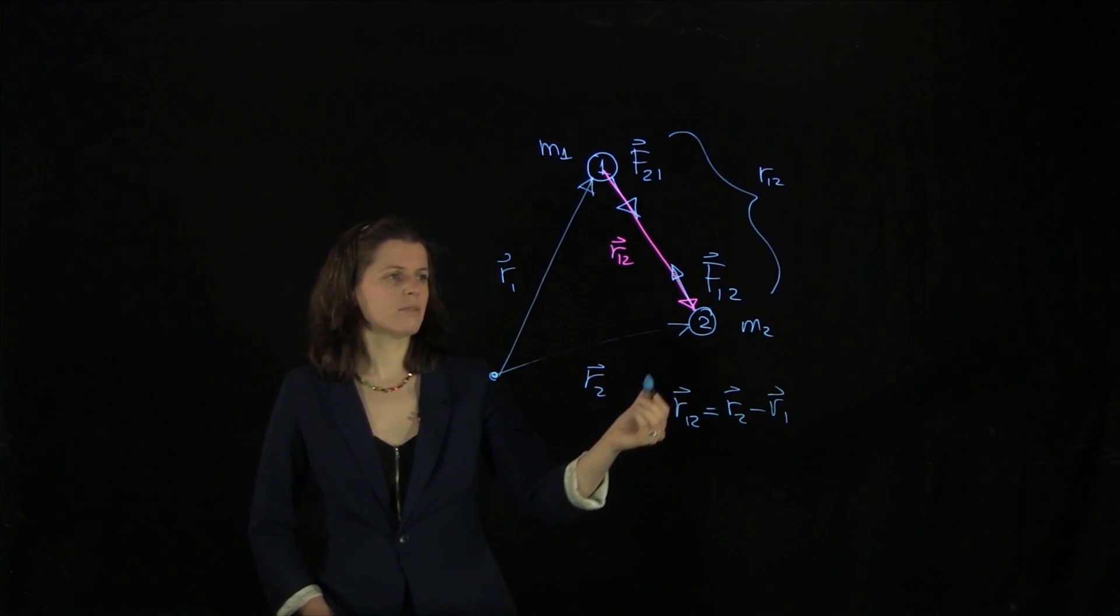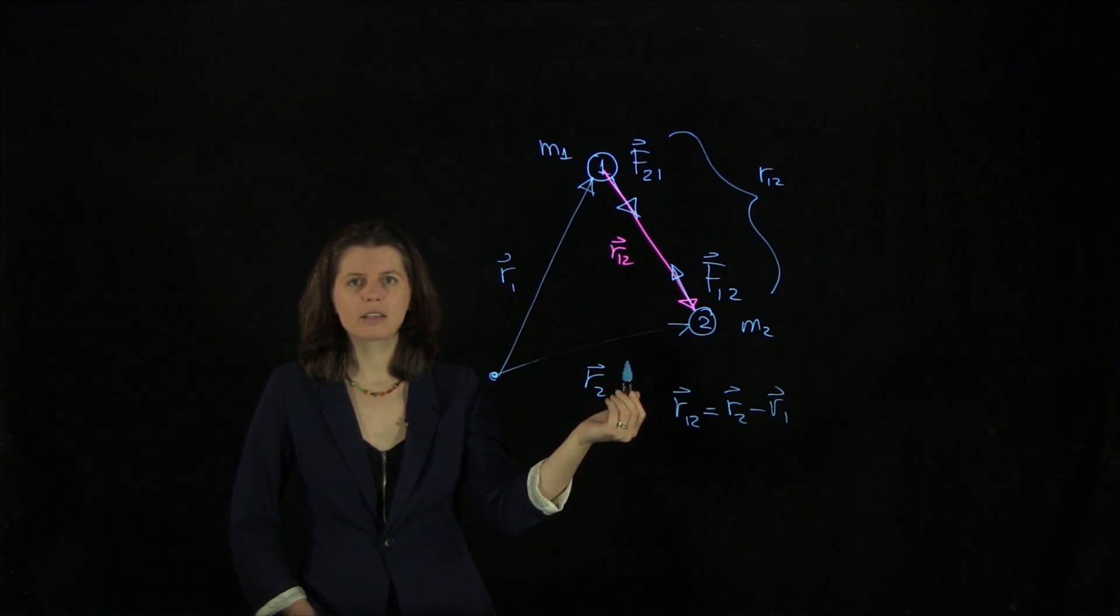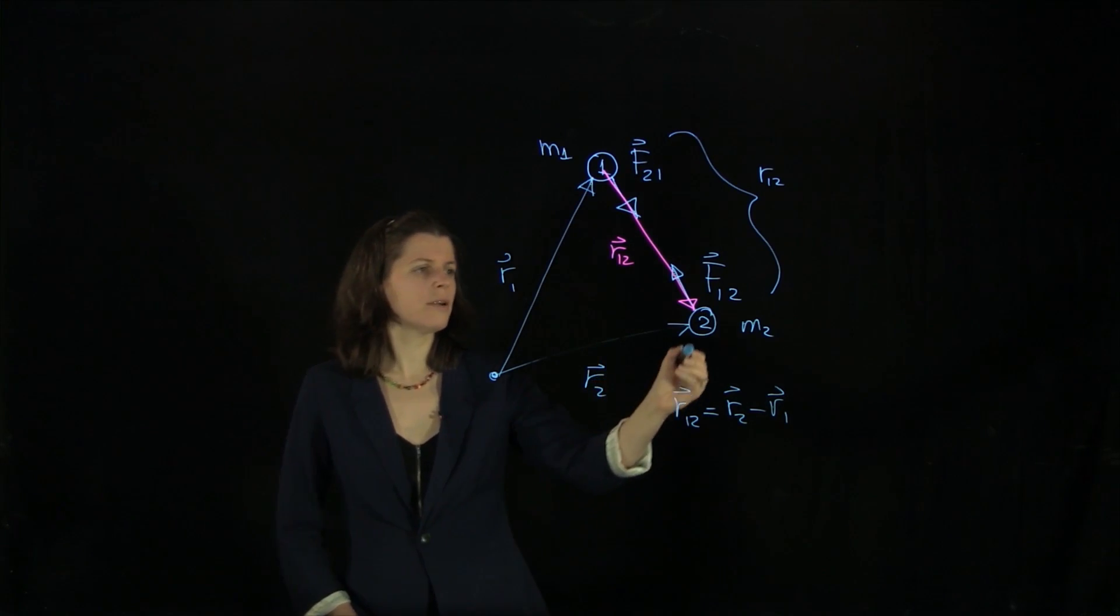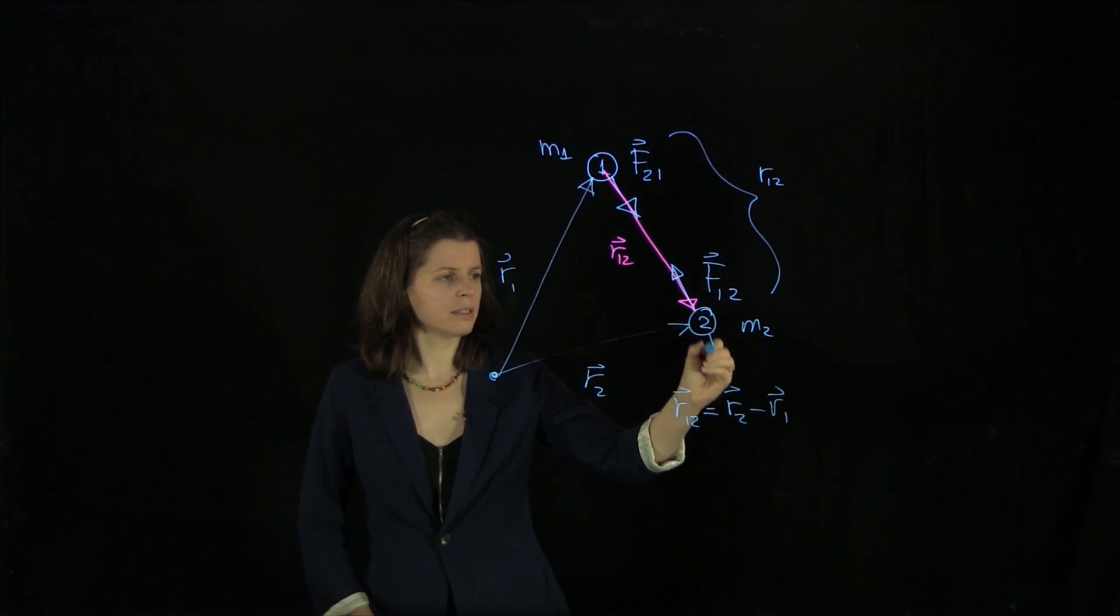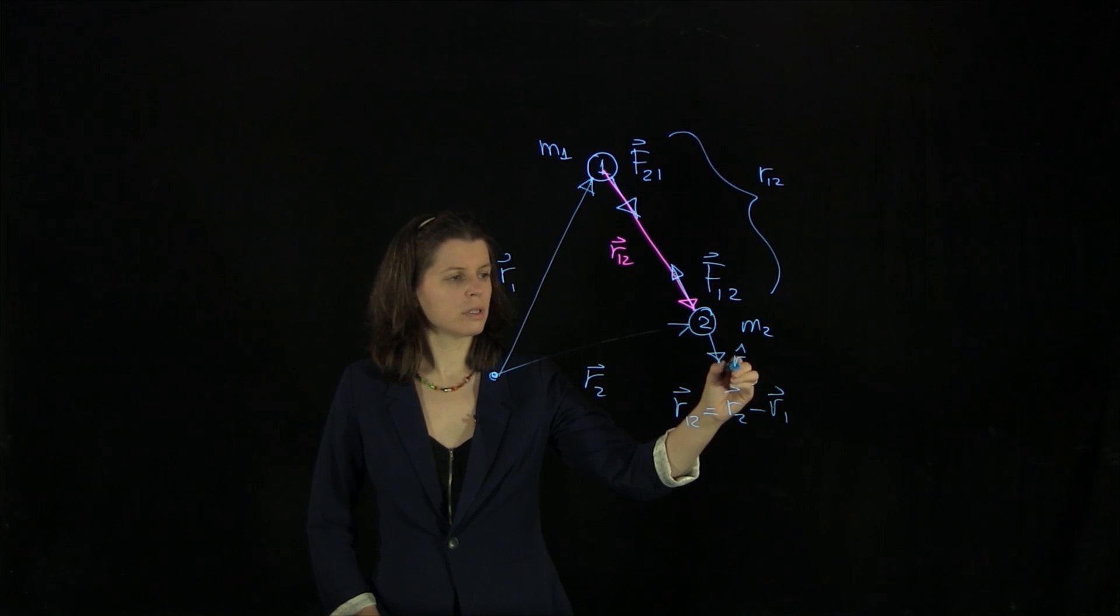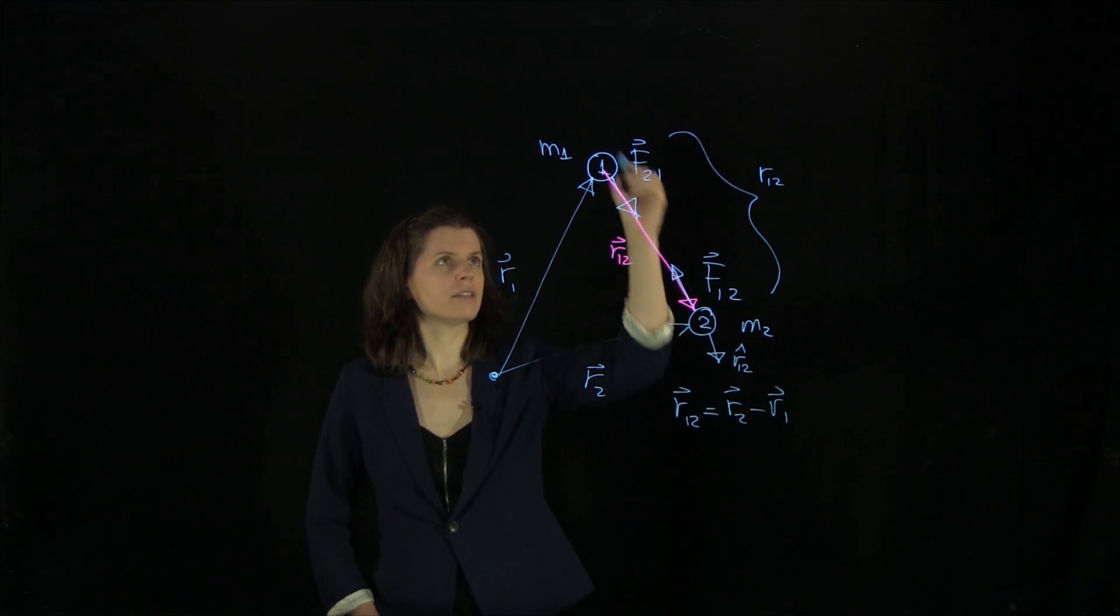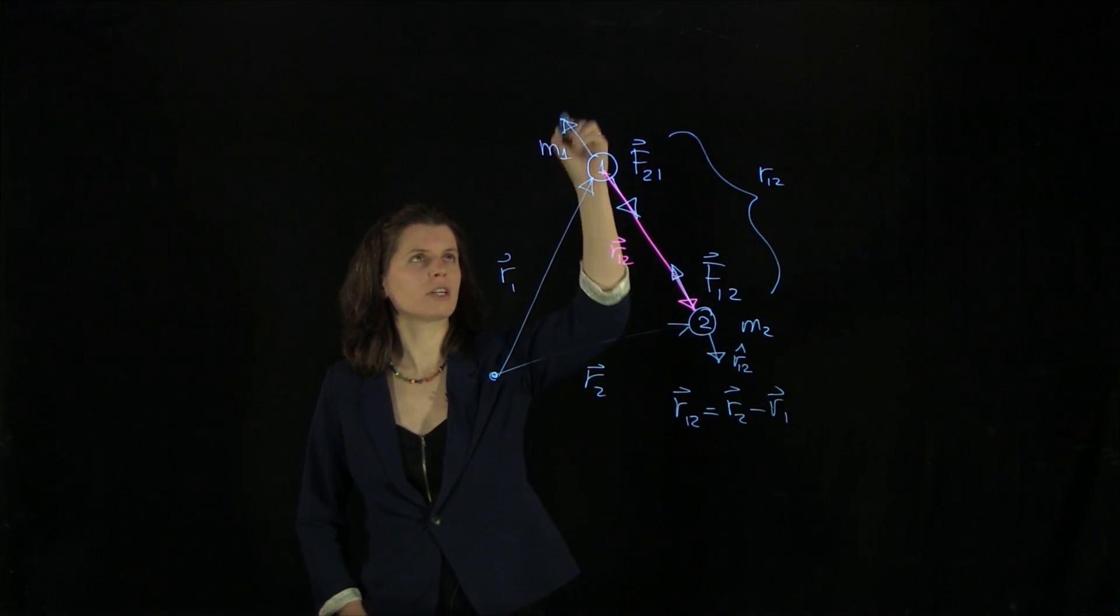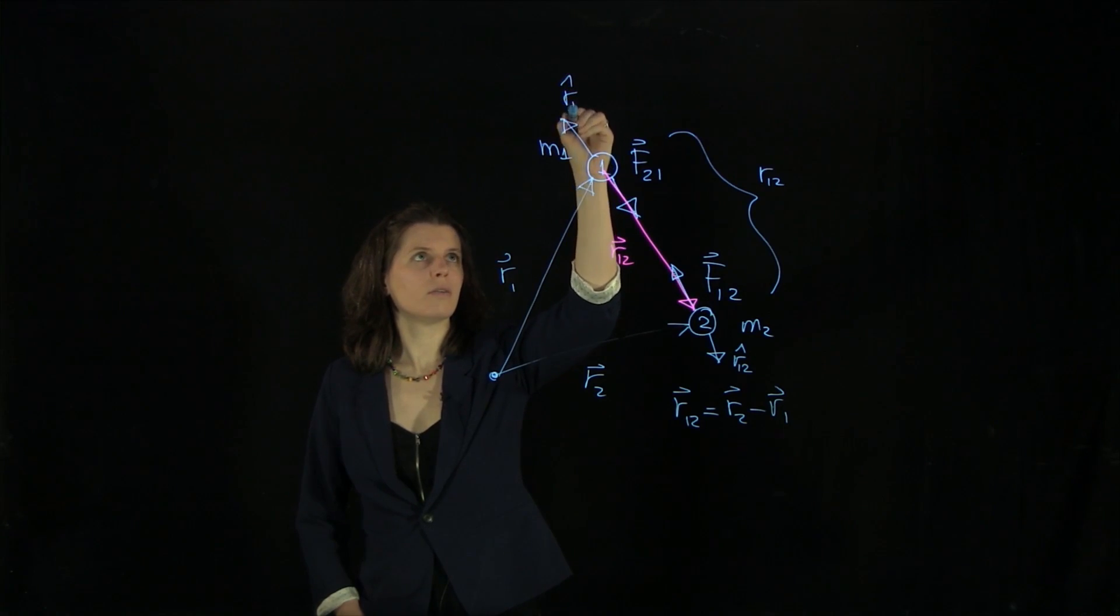And so in this case, we're going to choose an r-hat vector, which gives us the radial direction. And we're going to do this here. So this is going to be our r-hat direction on object two. And here we have an r-hat direction two one.